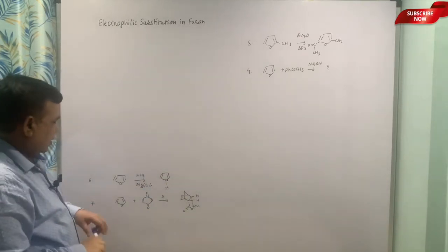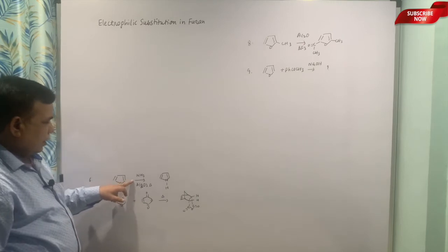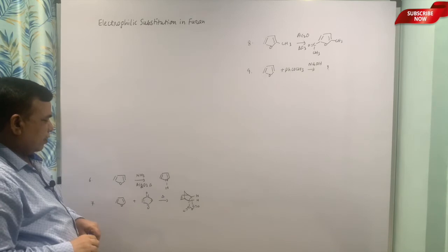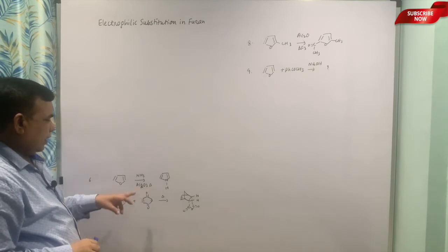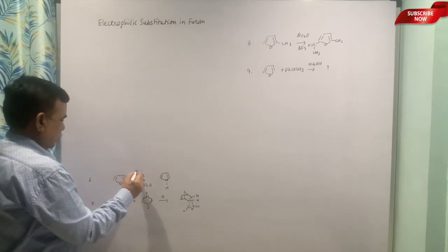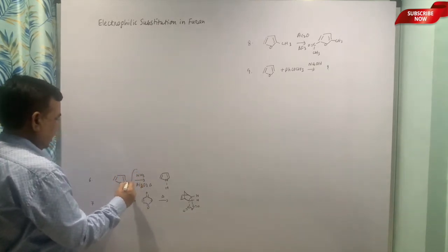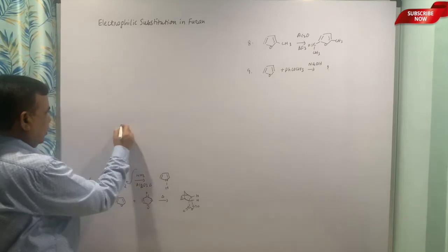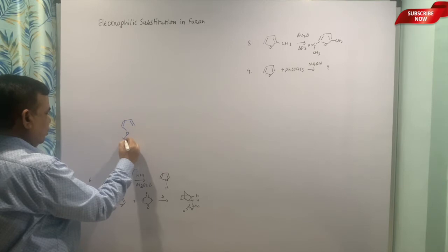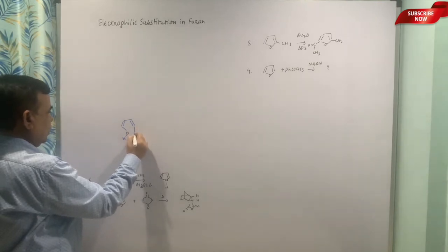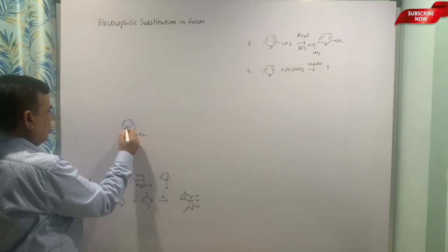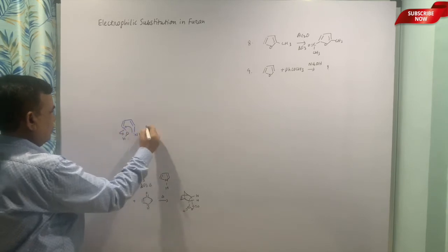The next one is: this furan is treated with ammonia in presence of aluminum oxide or alumina when heated. It will give rise to pyrrole. You can show the attack here and open it up. So it will be OH, let me put it this way, and then it will be NH2.